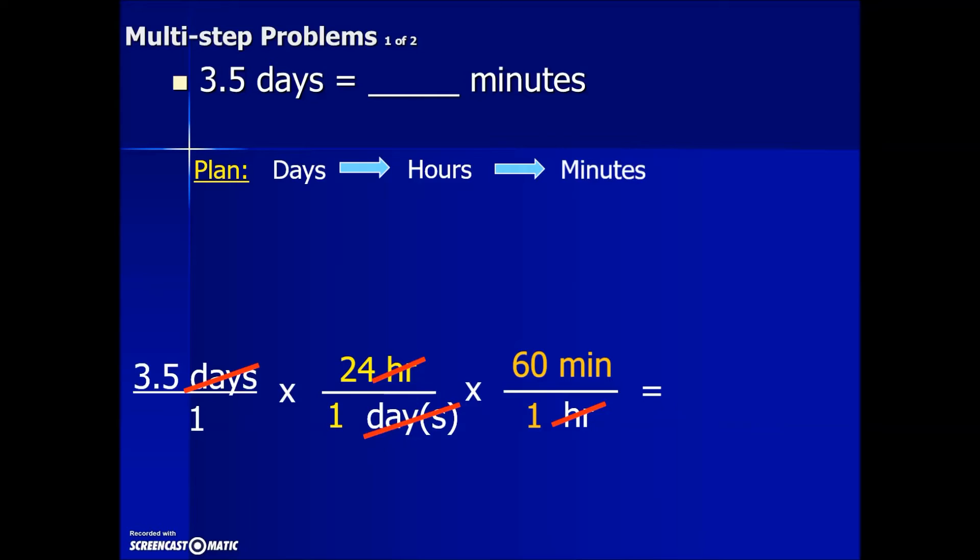Now we'll grab the calculator and simplify the fraction multiplication. We are going to multiply all the numerator values together, which means we're taking 3.5 times 24 times 60, resulting in 5040. Minutes is the only unit that's remaining. In the denominator we have 1 times 1 times 1, which is 1, and dividing any number by 1 gives us that value.